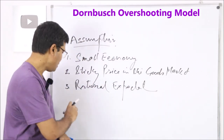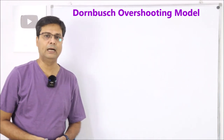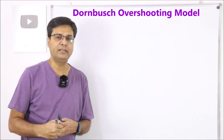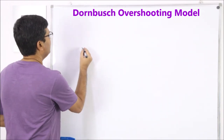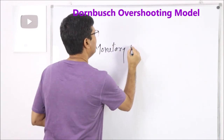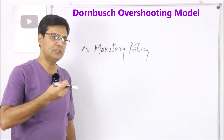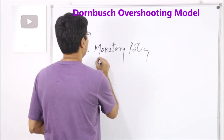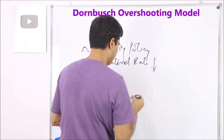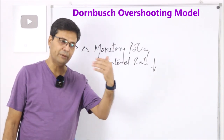Let's take the example that Dornbusch discussed. If a country changes its monetary policy — for example, the interest rate drops — what will happen in the market? When the interest rate is reduced, there will be a depreciation of the currency.